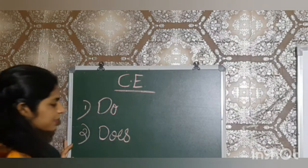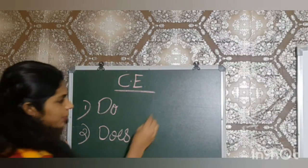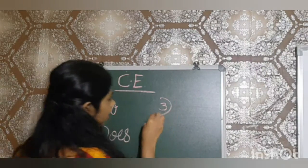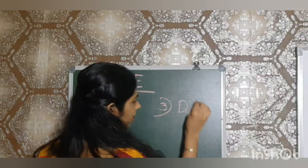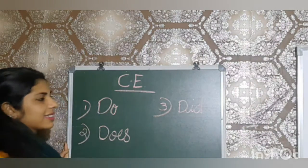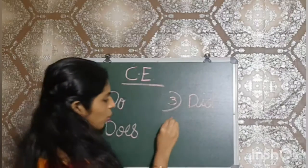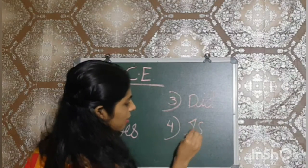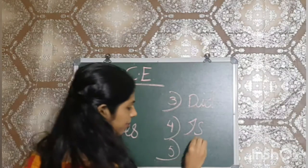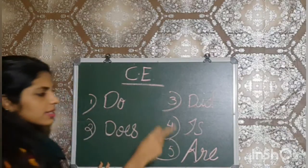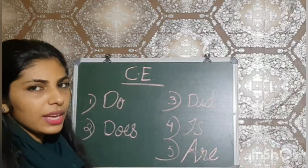Does. Do. Does. The third helping verb is did. The fourth one is is. What is this? Can you say? These are helping verbs.